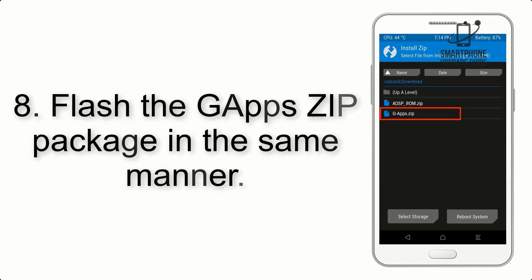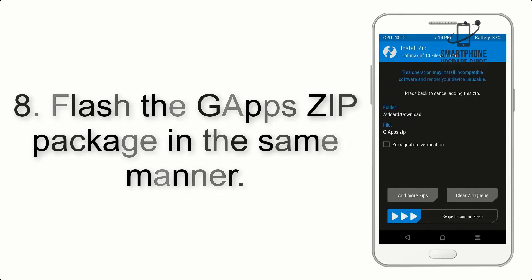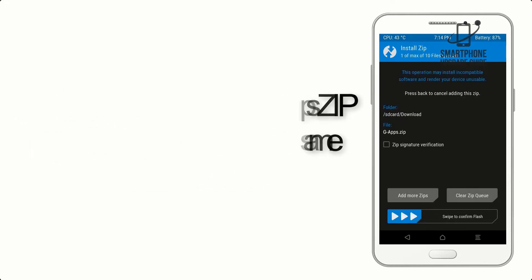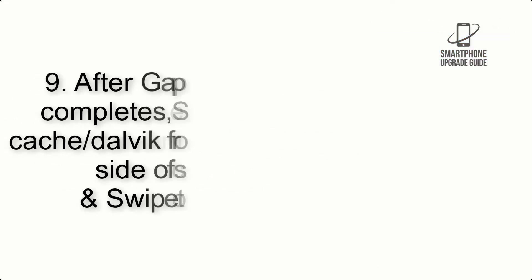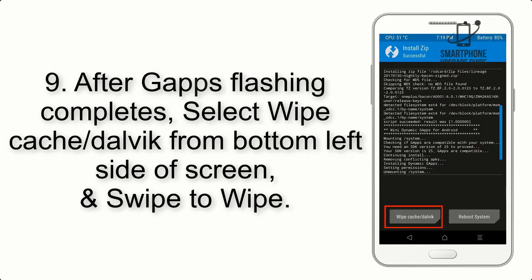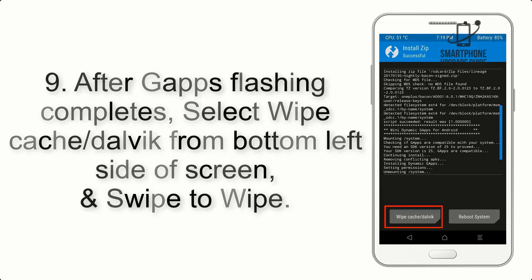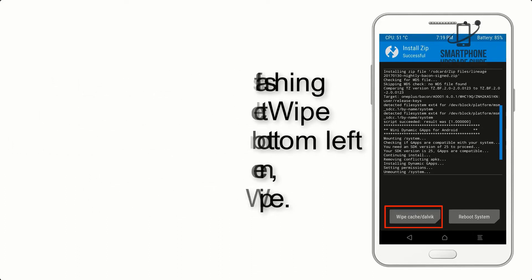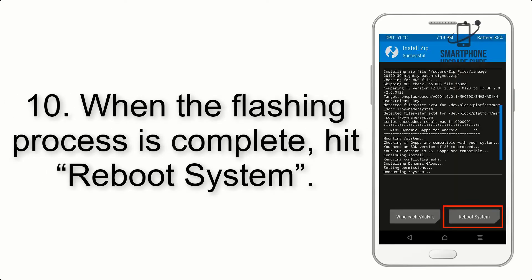Step 7: Swipe the button on the screen to install the ROM file. Step 8: Flash the GApps zip package in the same manner. Step 9: After GApps flashing completes, select Wipe Cache and Dalvik from the bottom left side of the screen and swipe to wipe.